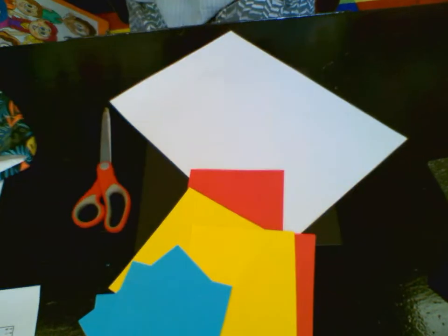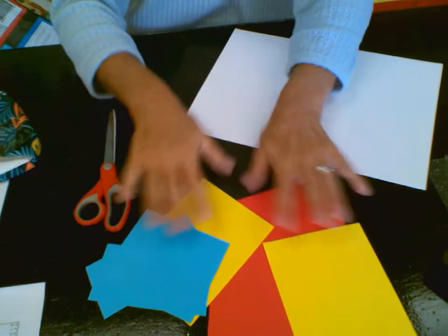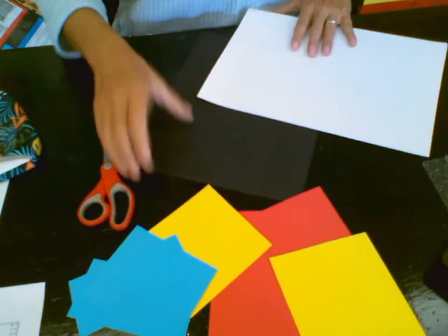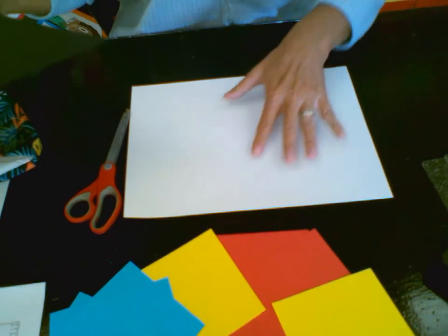So we're going to create a simple piece today using primary colors, a black piece of paper, and the white piece of paper is going to be for our background.